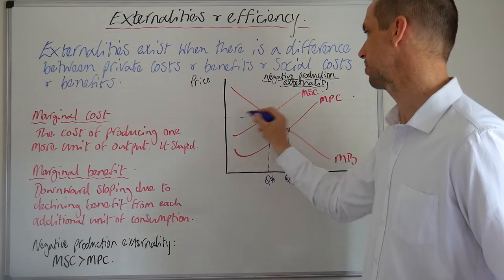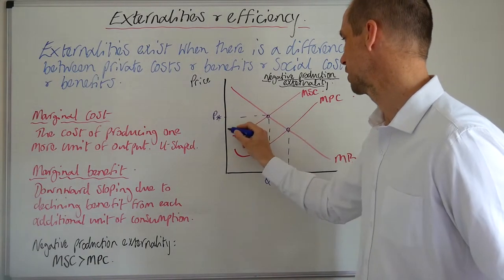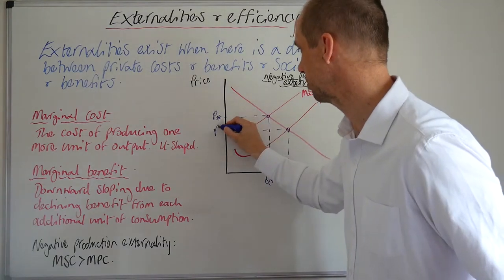So let's label up our price points, our corresponding price points. So we've got P star and then we've got P1 here.